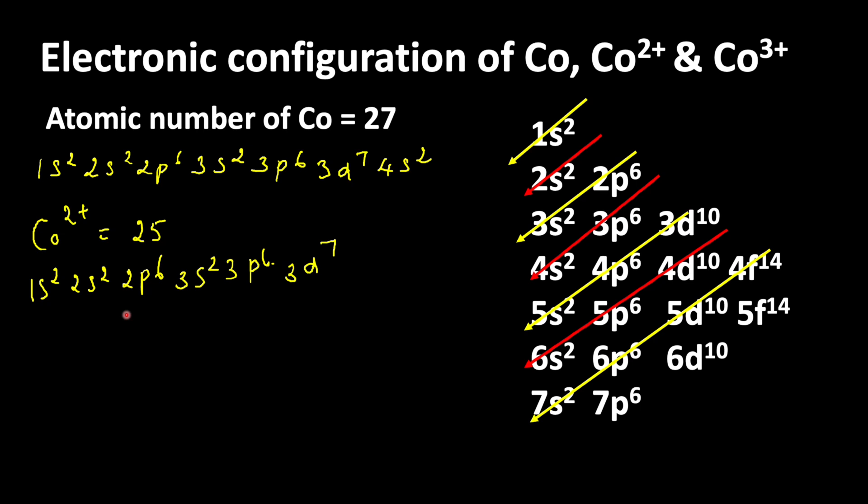Now we can write the electronic configuration of cobalt 3+. Cobalt 3+ ion is formed when cobalt loses three electrons, so 27 minus 3 gives 24 available electrons. The configuration is 1s² 2s² 2p⁶ 3s² 3p⁶. Three electrons are lost in cobalt 3+: two electrons from 4s orbital and one electron from 3d orbital, so 3d becomes 3d⁶. If you count the total electrons: 2+2+6+2+6+6 equals 24.